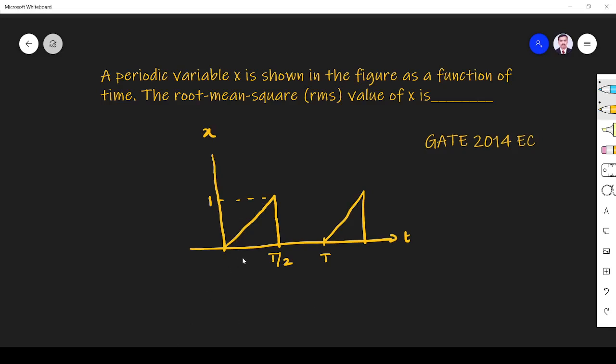Hi friends, in this video let us solve a network related question asked in GATE 2014 EC paper. The question is: a periodic variable x is shown in the figure as a function of time.